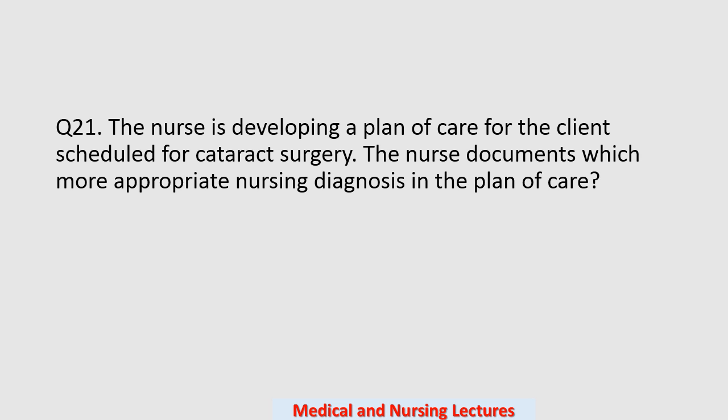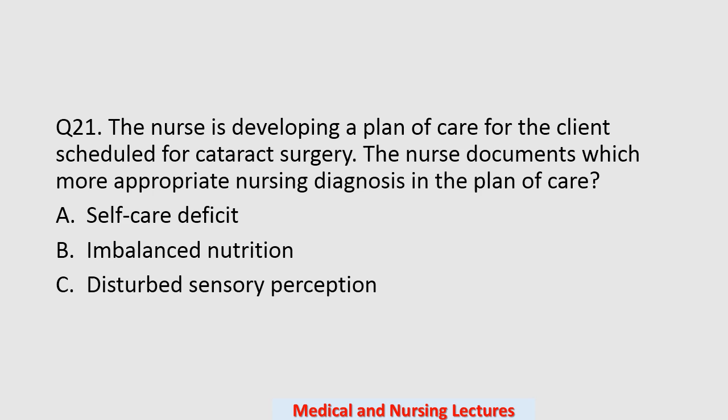Question number twenty-one: the nurse is developing a plan of care for a client scheduled for cataract surgery. The nurse documents the most appropriate nursing diagnosis — options are self-care deficit, imbalanced nutrition, disturbed sensory perception, or anxiety. All options are correct, but the best option is option C: disturbed sensory perception.